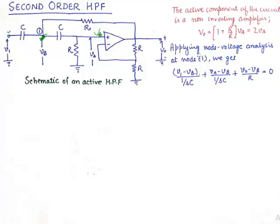Applying node voltage analysis at this node is the first step of analysis where we get that V1 minus VB upon this passive component, basically expressing the voltage upon the passive component. VA minus VB will be this passive component and V0 minus VB has this passive component over here.